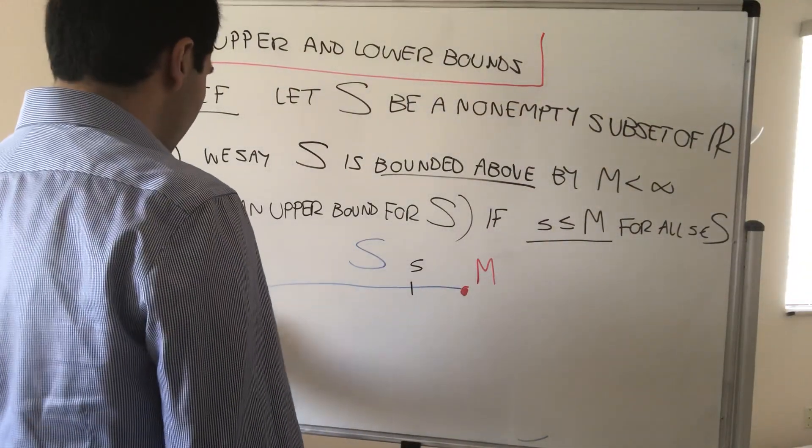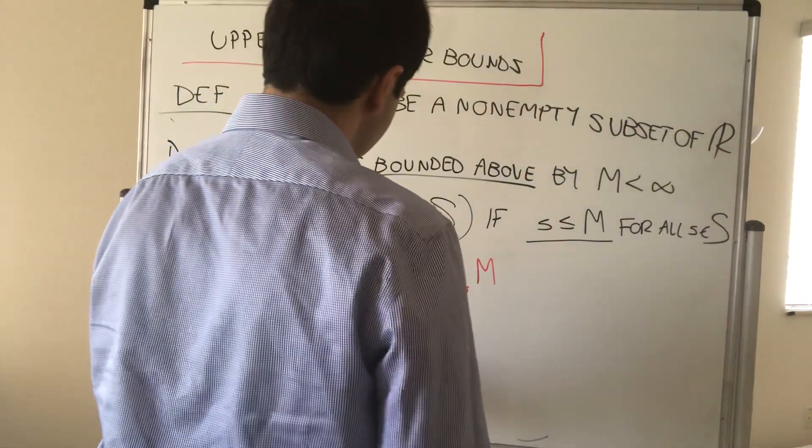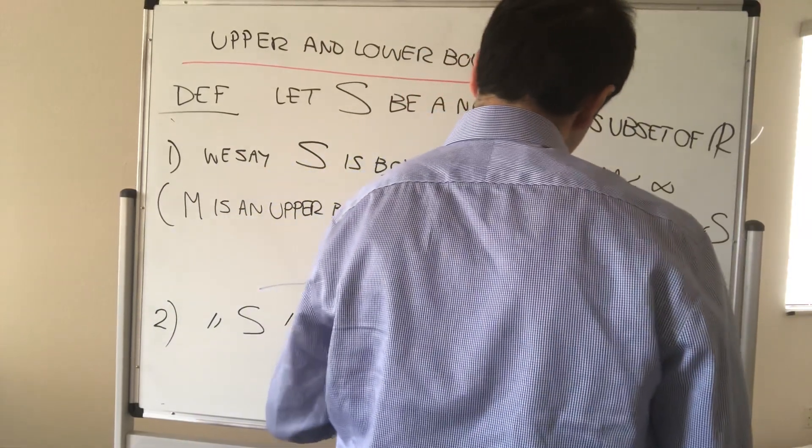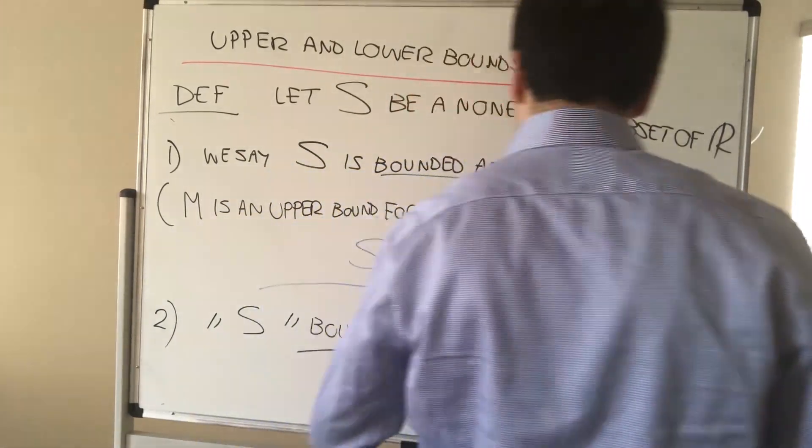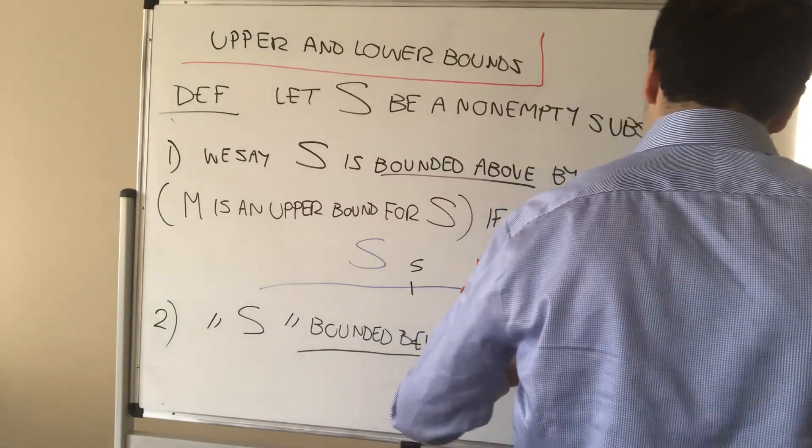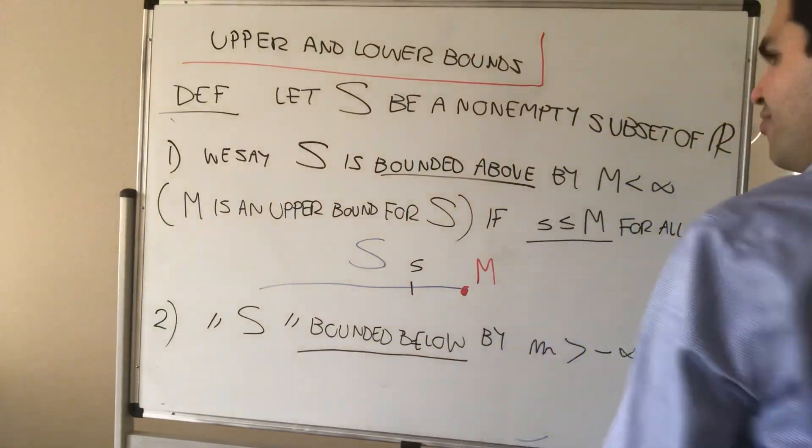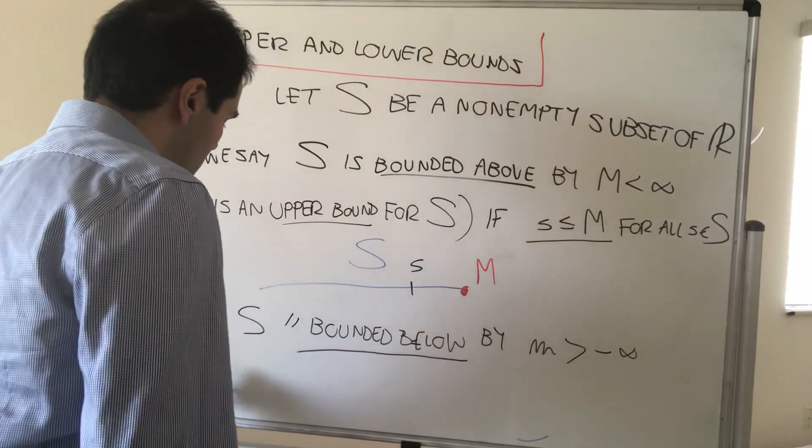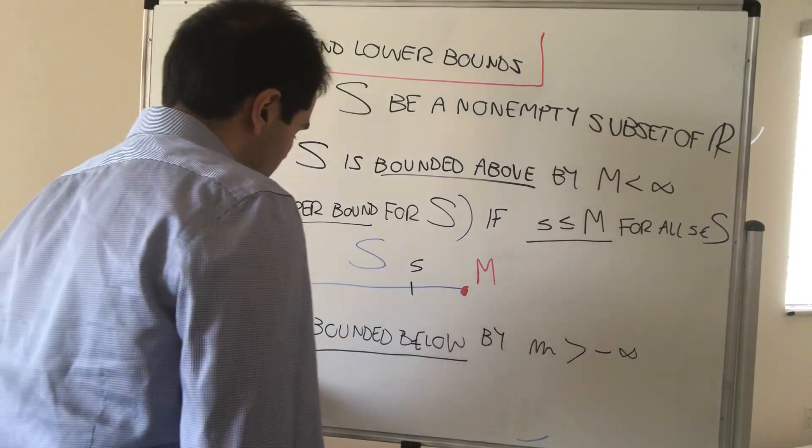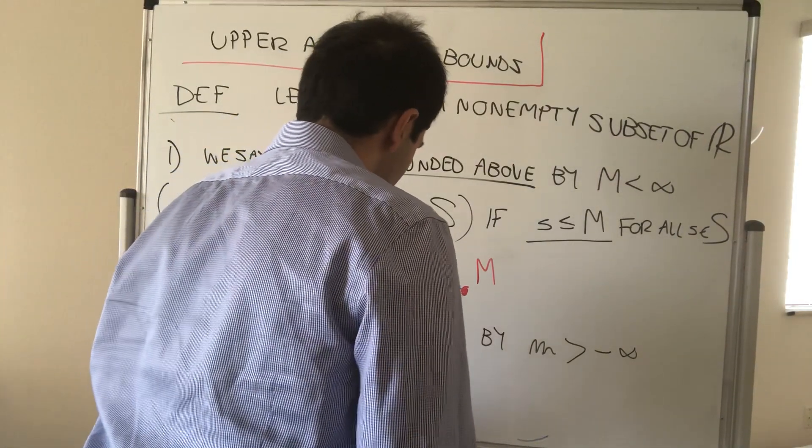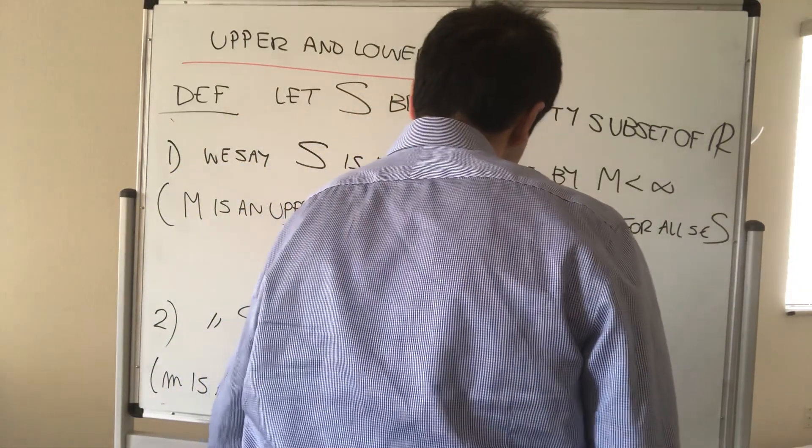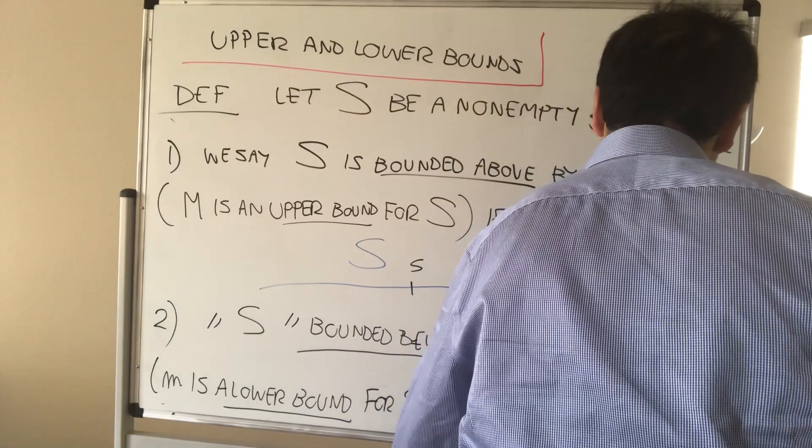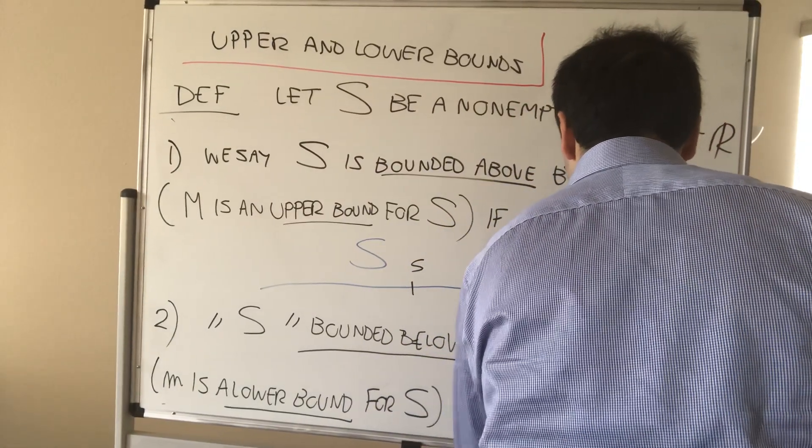And similarly, we say S is bounded below by some number greater than minus infinity, or equivalently M is a lower bound for S, if S is greater or equal to M for all S.